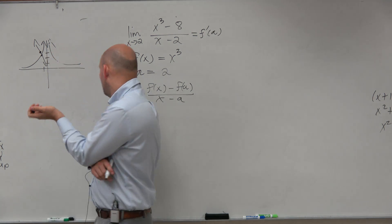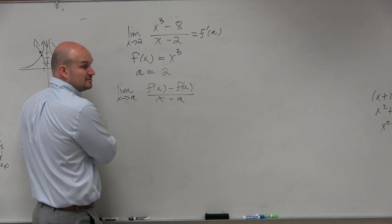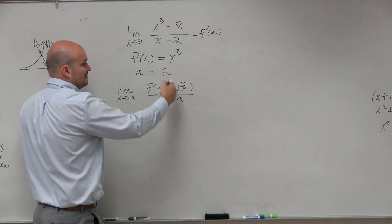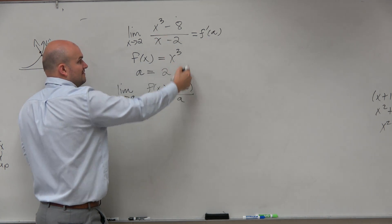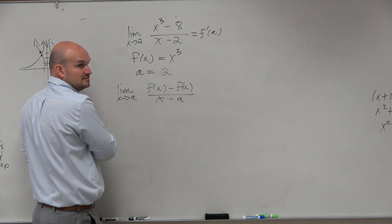So if you go back to your limit definition, this is our first original notes. It's f of x minus f of a over x minus a. f of x is x cubed, f of a is 8, x is x, a is a. Make sense?